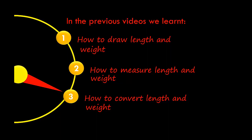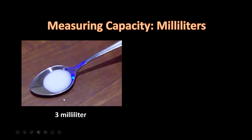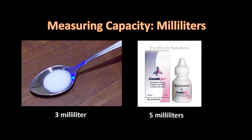So what unit would we use to measure a very small unit of capacity? Well, for that we use milliliters. To get the idea of a milliliter, a spoon with milk is approximately 3 milliliters. If that didn't give you the idea, a small bottle of medicine would be around 5 milliliters, or 2.5 milliliters.